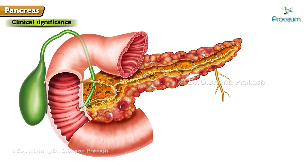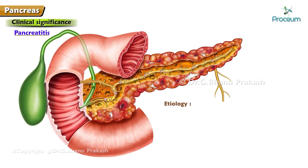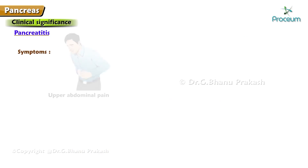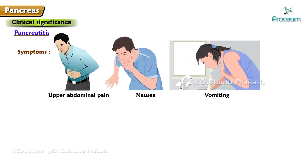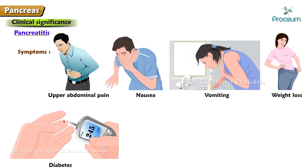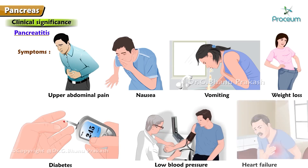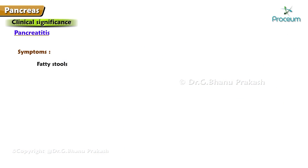Clinical significance — Pancreatitis: it is the inflammation of the pancreas. It is most commonly caused by gallstones and alcohol consumption. Symptoms include upper abdominal pain which may be severe, constant, and may radiate to the back, as well as nausea, vomiting, weight loss, diabetes, low blood pressure, heart failure, fatty stools, mild jaundice, and kidney failure.